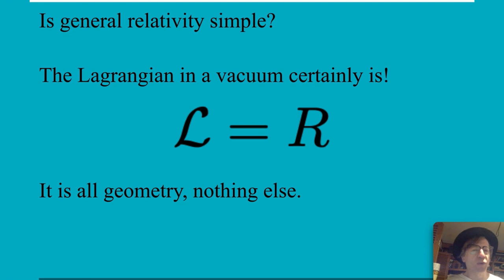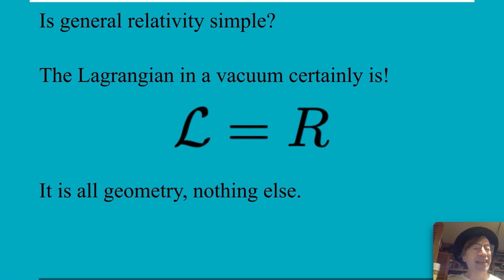Is general relativity simple? Well, look at the Lagrangian in a vacuum. A Lagrangian is all the ways energy can be interchanged, and we're saying it's only this R thing, which is actually the Ricci scalar. So it's all geometry, nothing else. That's simple. And this has been a good thing for general relativity.